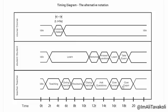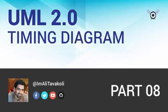In the alternative notation, we can still see our participants and how long each state is going to stay, and when exactly each one will change to another state for each participant. That's all there is to a Timing Diagram. I hope you enjoyed it. Follow the next part of our tutorial to see the upcoming diagrams, and please don't forget to subscribe to be notified of our upcoming tutorials. See you there.